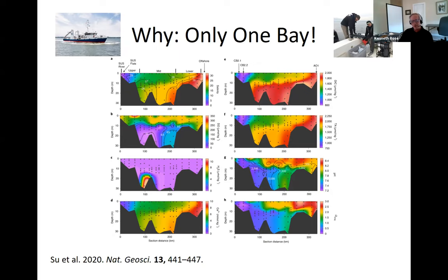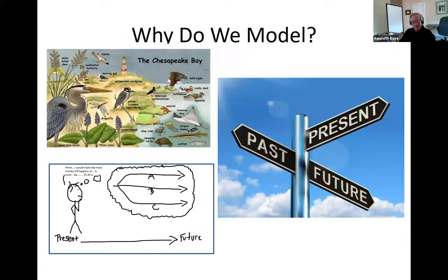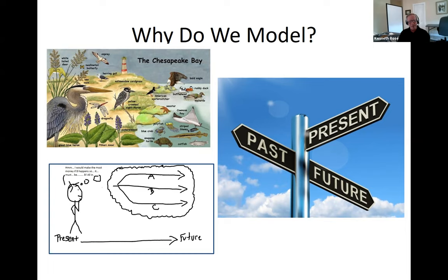Many things happen at the same time in the Bay. When we want to know if reducing fertilizer on farmland improved water clarity, we may also have a drought year, heavy rainfall, or a warm year — it gets difficult to tease apart how much of what you see is due to the action you took. The Bay is complicated but understandable. With models, we want to know about the present, and we look at the past to check if the model reasonably represents what happened, but the big one is the future.